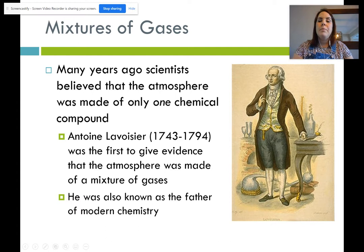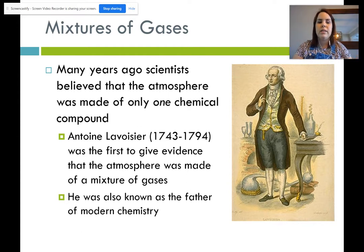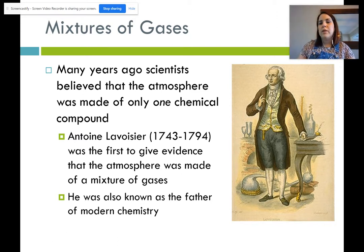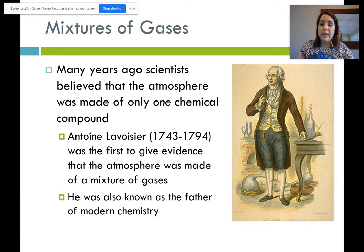Many years ago, chemists believed the atmosphere was made of only one chemical — essentially just 'air' as one compound. Now we know the room you're in right now is a mixture of gases: carbon dioxide, oxygen, nitrogen, and many others. Antoine Lavoisier was the first to give evidence that the atmosphere was made of a mixture of gases, and he's also known as the father of modern chemistry.